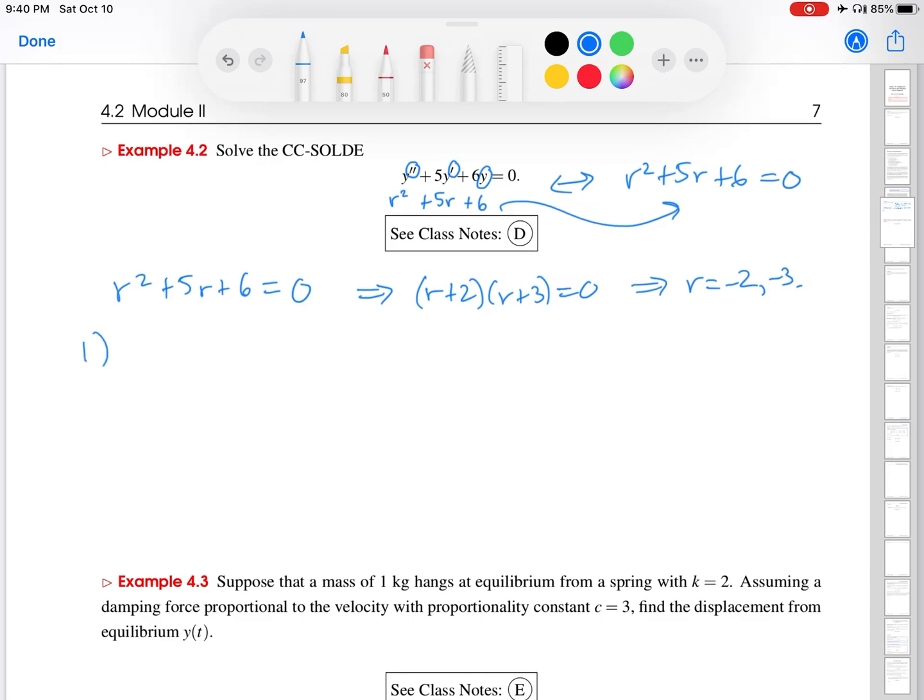So that yields two solutions to the ODE of the form e to the rt: e to the r1t and the second solution is e to the r2 times t.